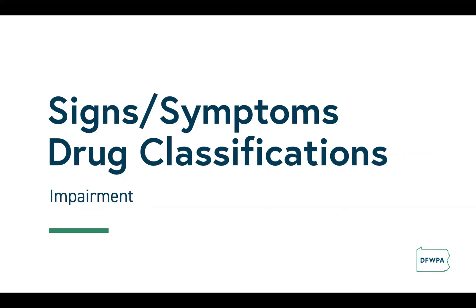Before we begin, it is important for us to define 'under the influence.' Being under the influence of a substance means exhibiting diminished capacity emotionally, behaviorally, and/or physically that affects decision-making and possibly safety — a condition of being unable to perform a task as a consequence of using a substance and showing signs and symptoms of impairment.